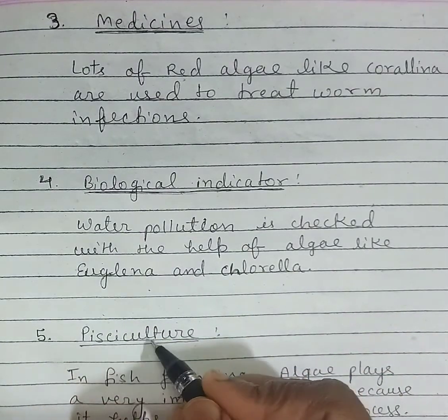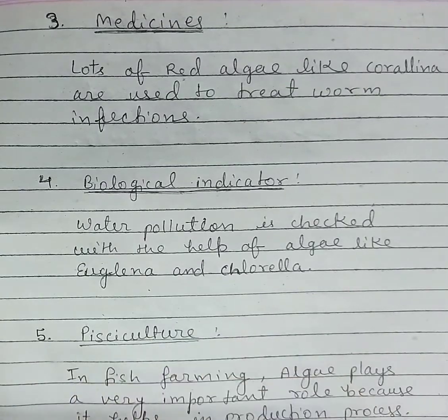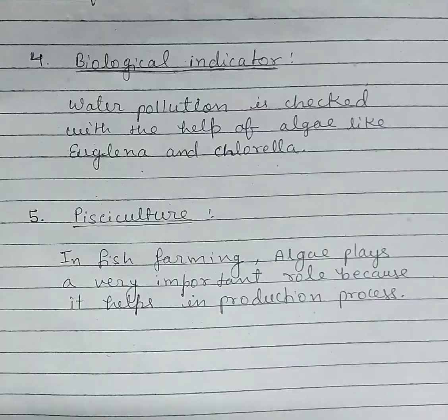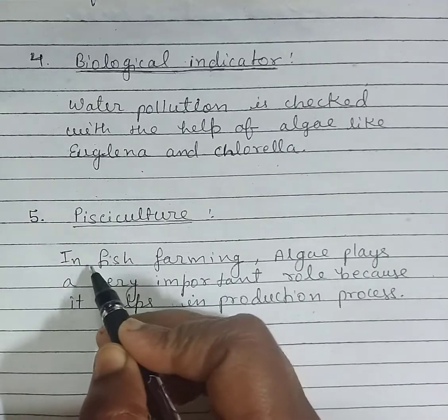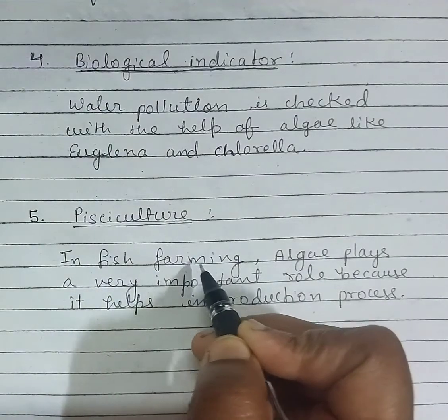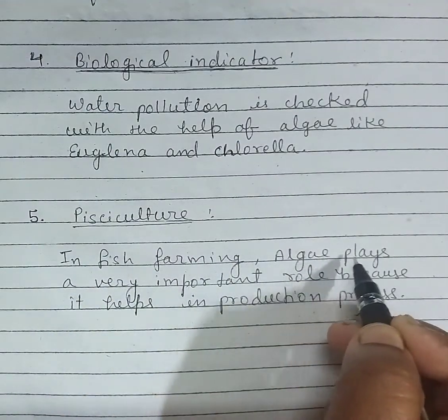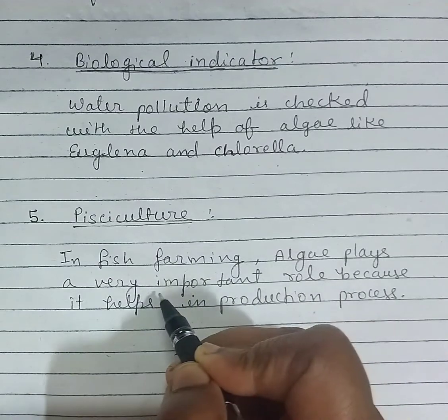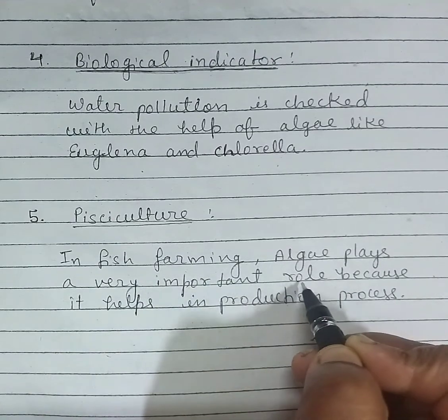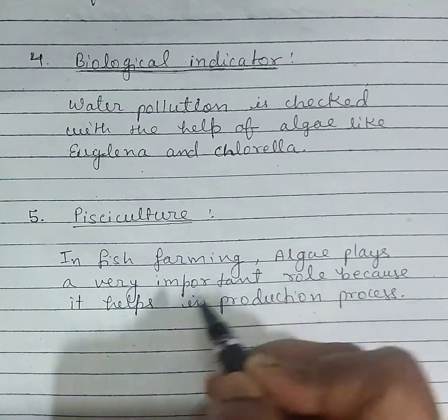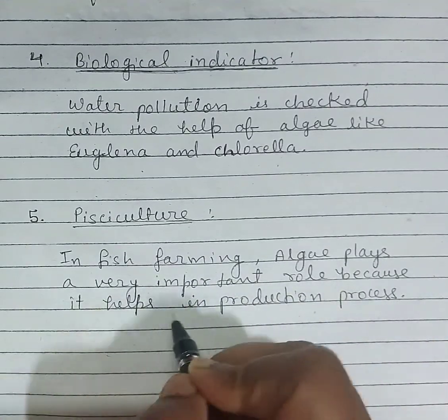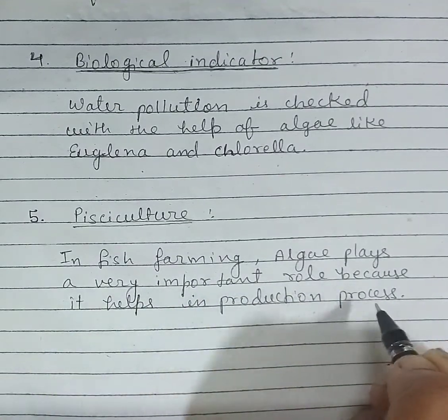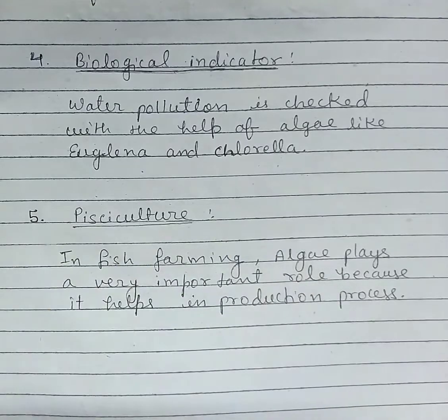Fifth, pisciculture. In fish farming, algae play a very important role because they help in the production process, supporting algae growth in large quantities.